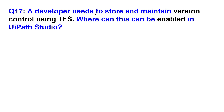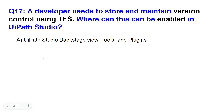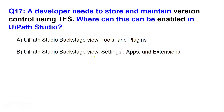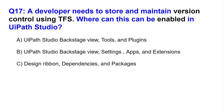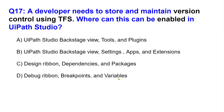A developer needs to store and maintain version control using TFS. Where can this be enabled in UiPath Studio? Option A: UiPath Studio backstage view, tools and plugins. Option B: UiPath Studio backstage view, settings, apps and extensions. Option C: Design ribbon, dependencies and package. Option D: Debug ribbon, breakpoints and variables. Which one do you think is the right answer? Take your time.